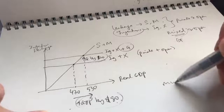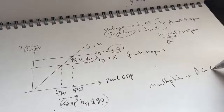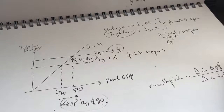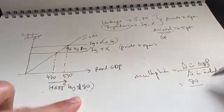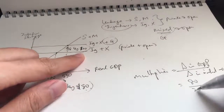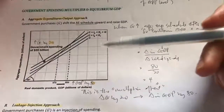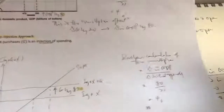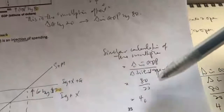So what is the multiplier? Using the same formula — change in GDP over change in initial spending — our change in GDP is 80 and the initial spending change is 20, so the multiplier is 4. To recap, whether we use the aggregate expenditures and output approach or the leakage injection approach, we get the same multiplier calculation of 4.